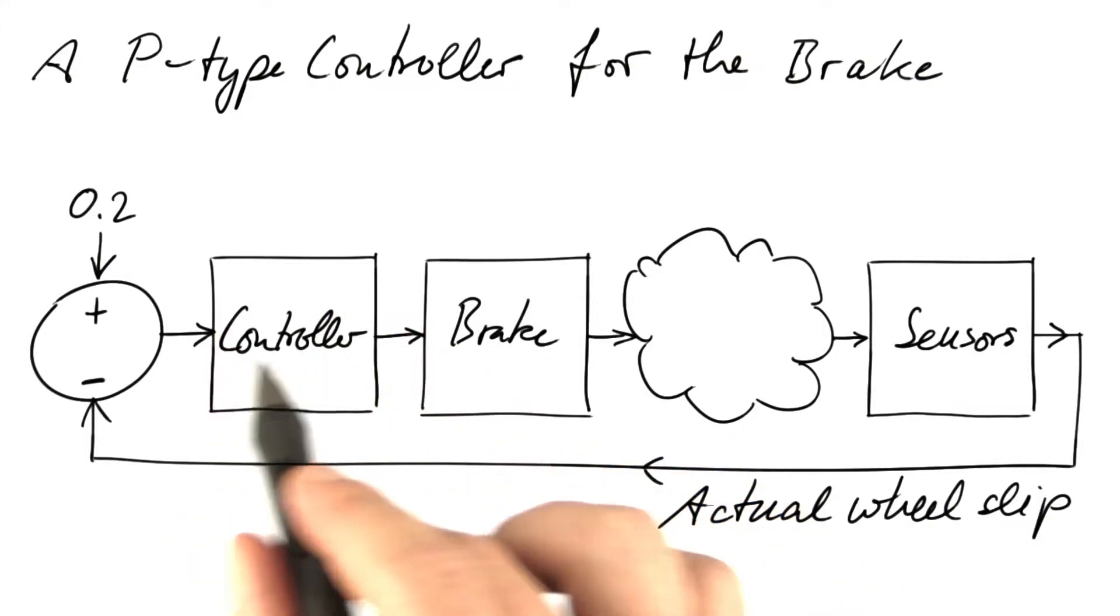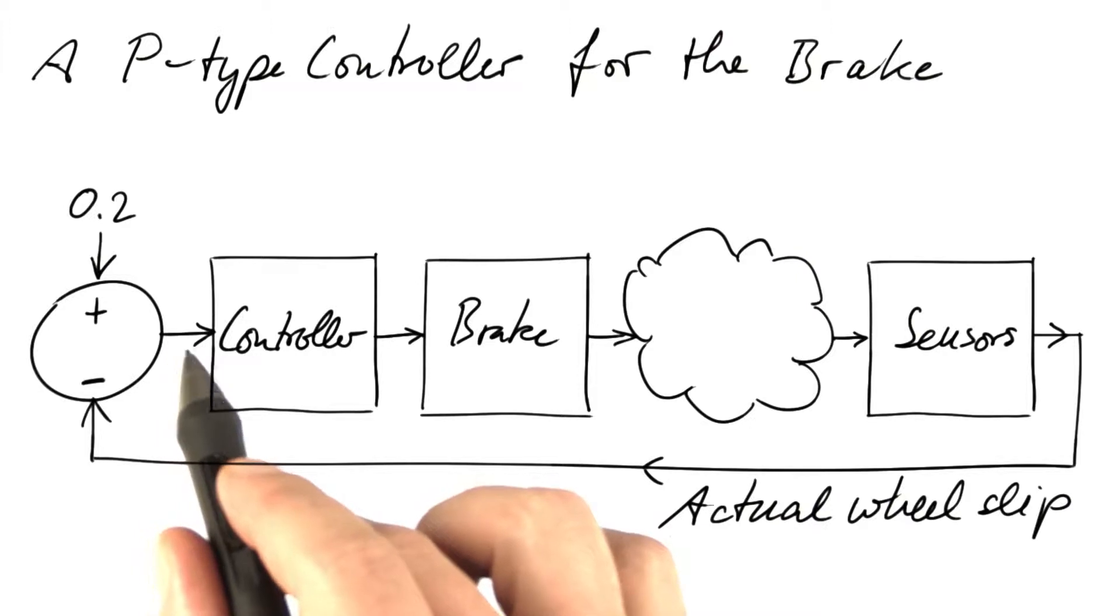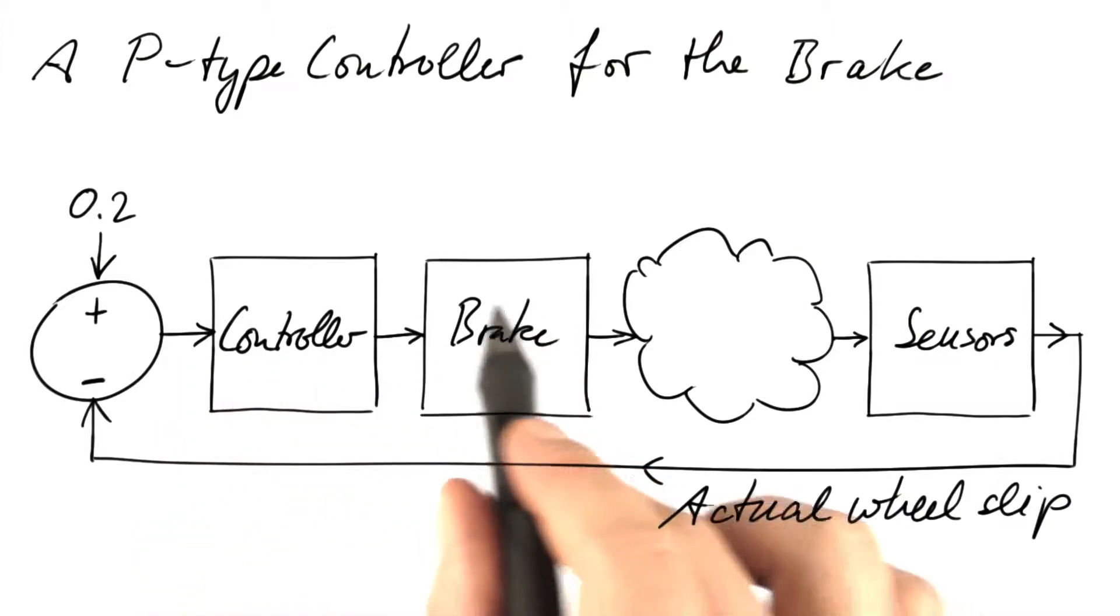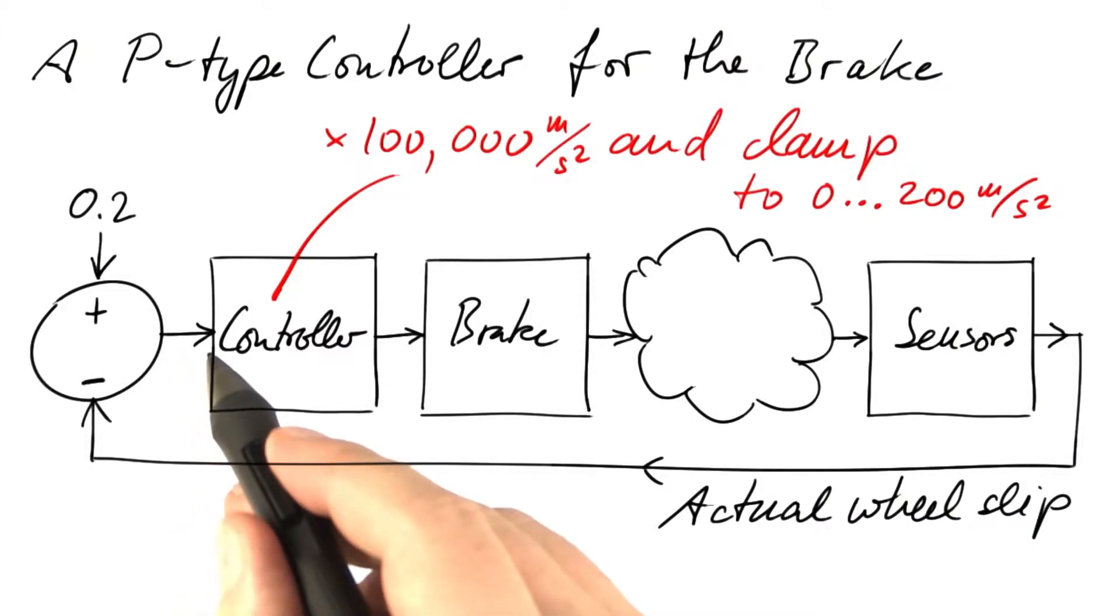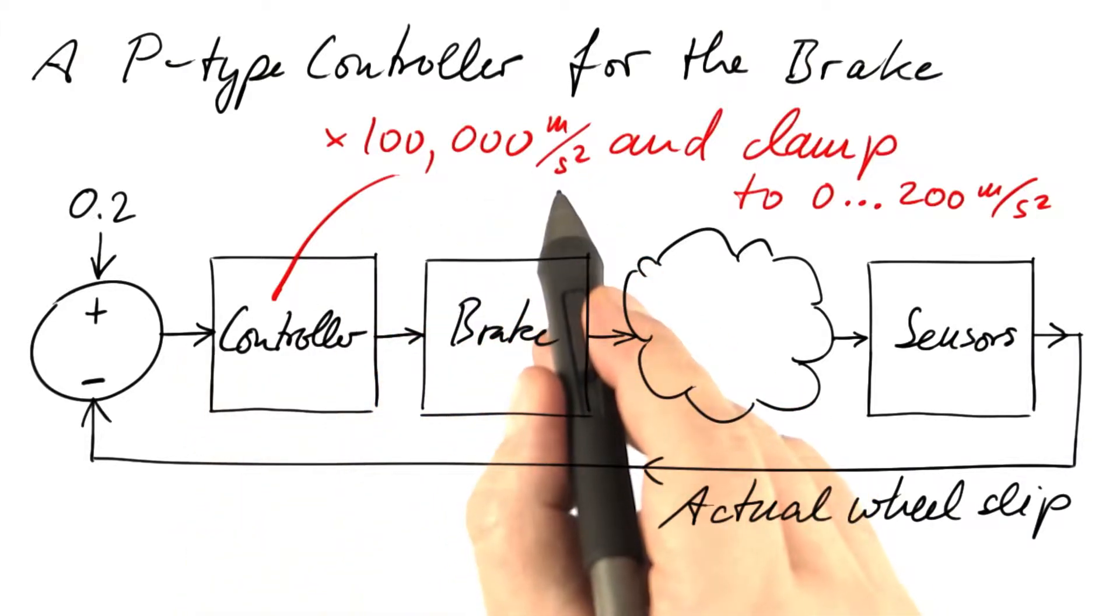It simply multiplies the error by some number to produce the input for the brake. To be more concrete, let's multiply the error with 100,000 meters per second squared.